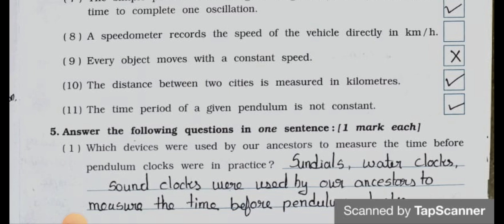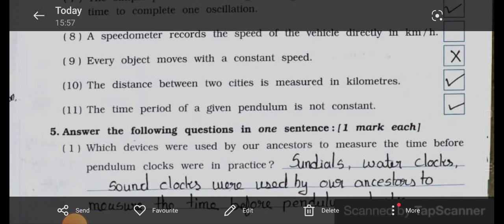Now see the main five: answer the following questions in one sentence, one mark each. Question number one: which device were used by ancestors to measure the time? Answer is candles, water clocks, sound clocks were used by our ancestors to measure the time before pendulum clocks.